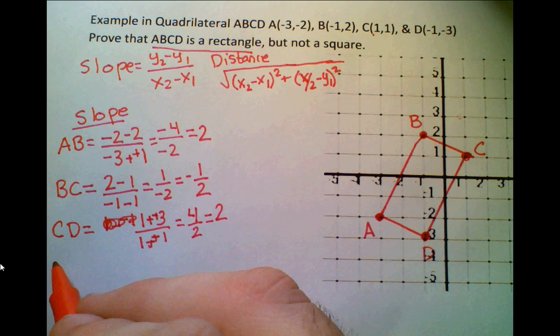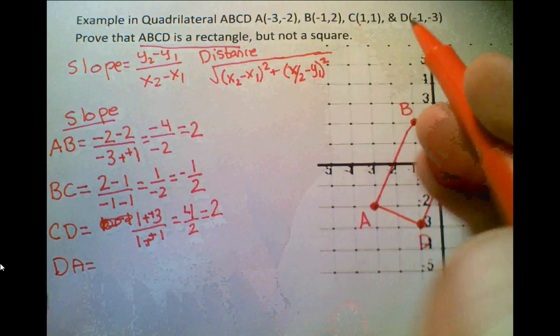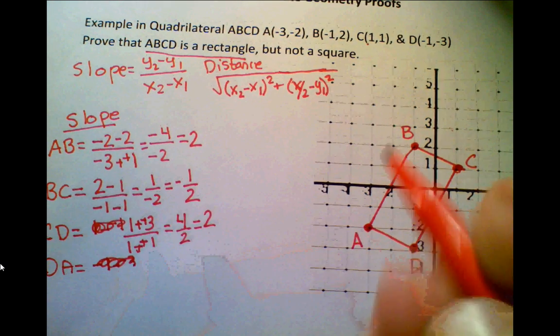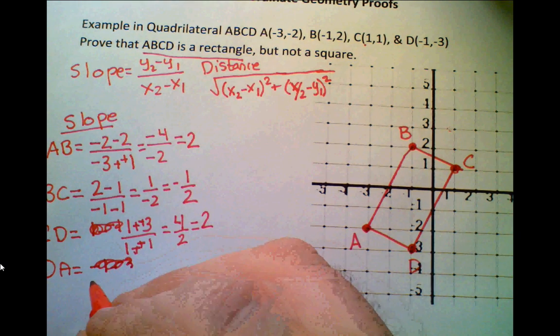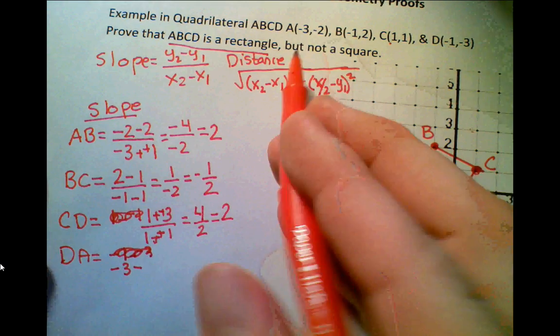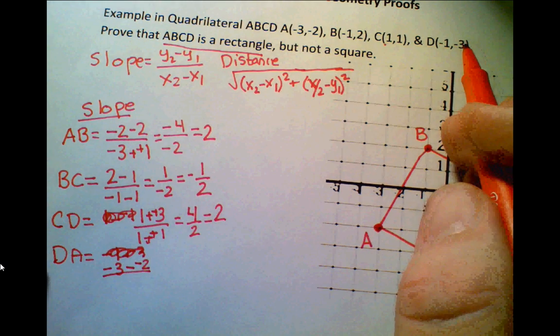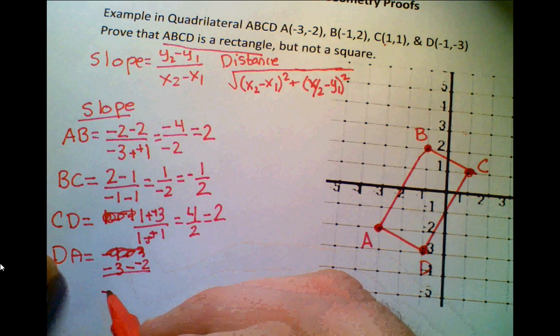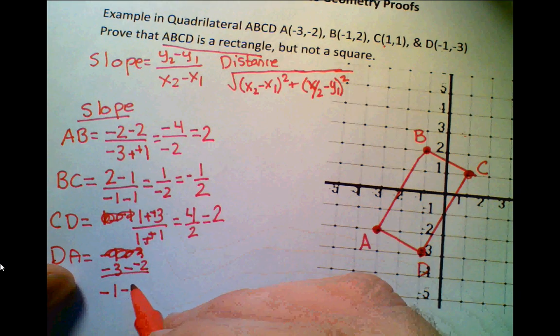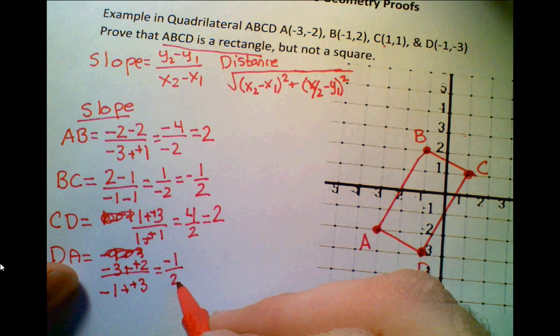Now, for DA, we're going to do -3 minus -2, all over -1 minus -3. We have the pluses again, so this ends up becoming -1 all over 2, which is equal to -1/2.